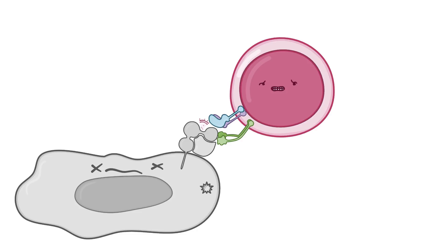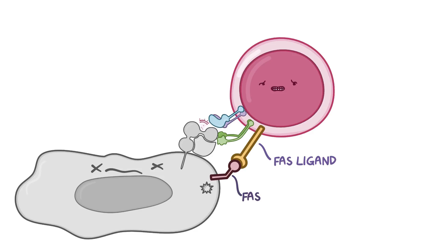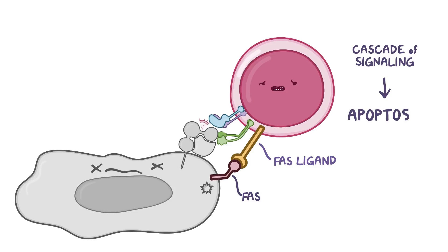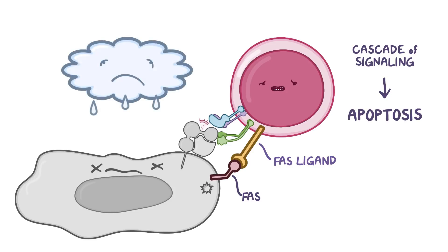And as if that weren't enough, the cytotoxic T cells have a protein called FAS ligand on their surface. FAS ligand binds to a protein called FAS on the surface of the infected cells, and when those two combine, it triggers a cascade of signaling events inside the target cell that also leads to apoptosis. So either way, the infected cell is doomed.